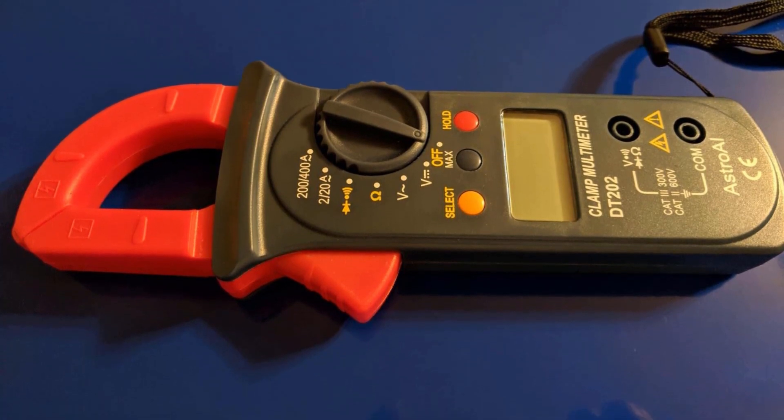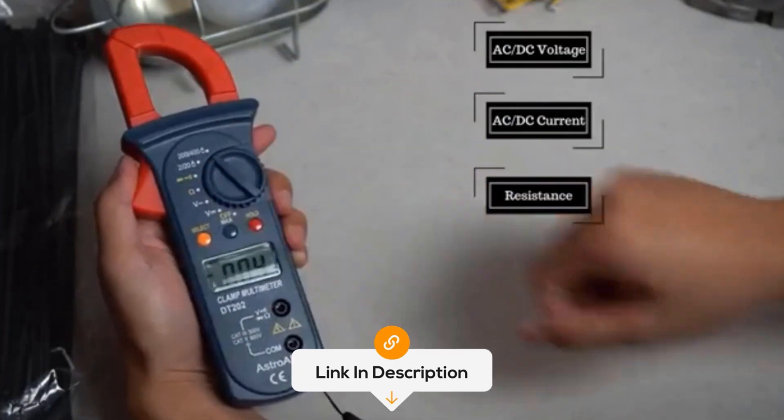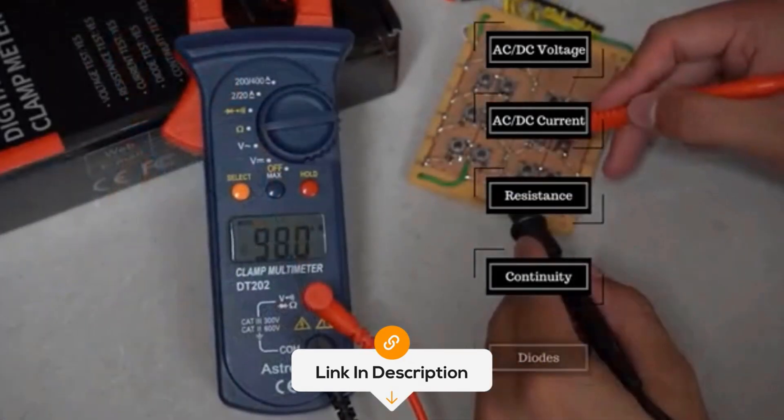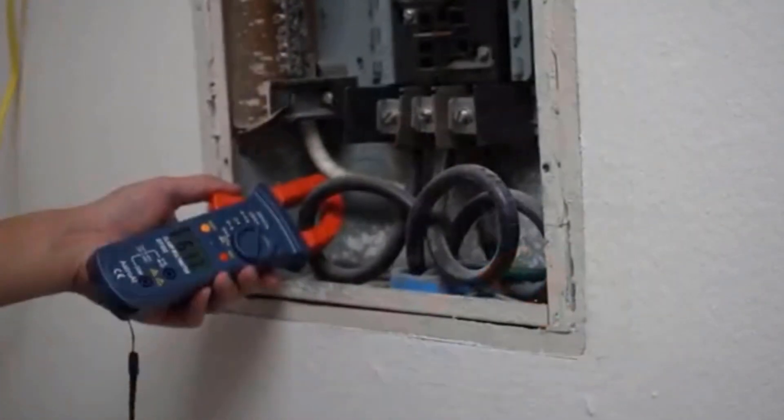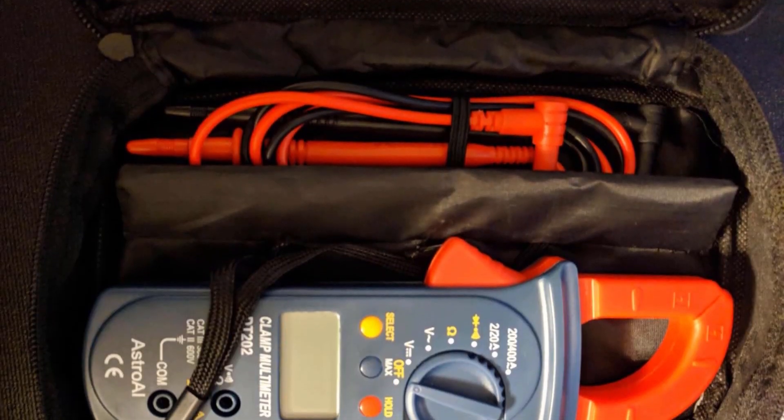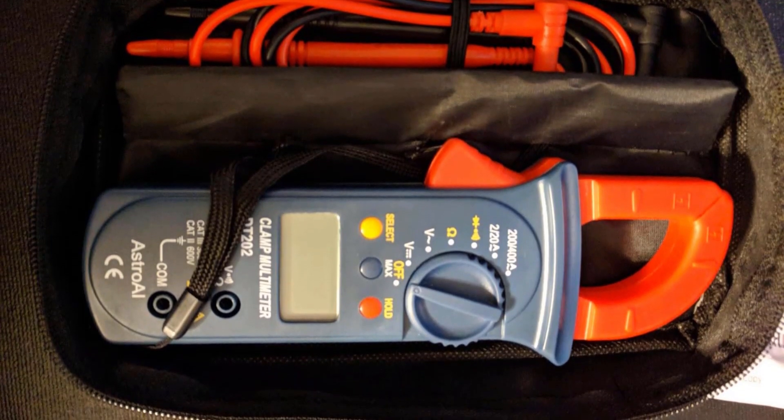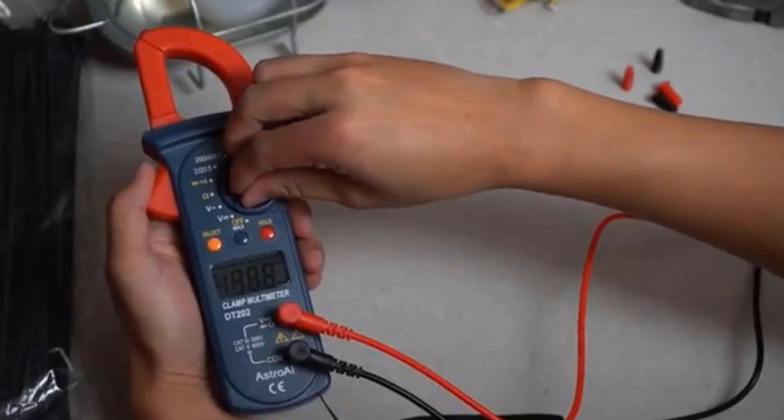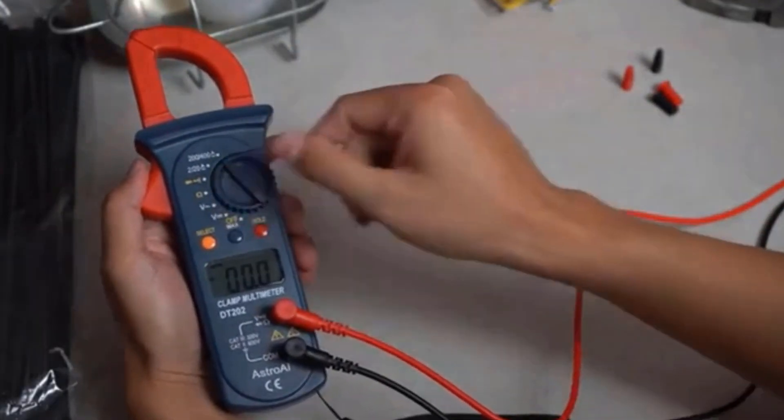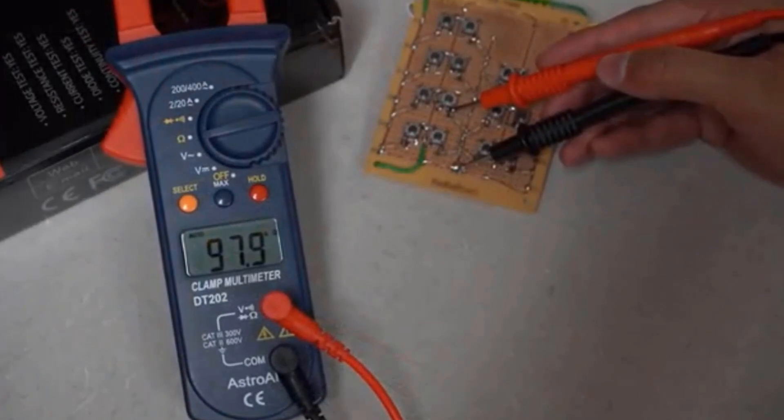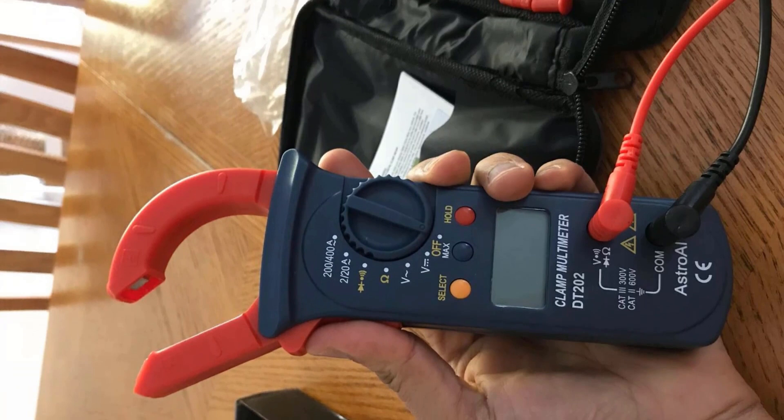The clamp meter measures AC current up to 400A and offers accurate readings for AC-DC voltage up to 600V. It also supports measurements of resistance up to 2K ohms and features continuity testing, enabling users to troubleshoot electrical issues effectively. Equipped with a 2000-count display, the Astro AI Clamp Meter provides clear and detailed readings.